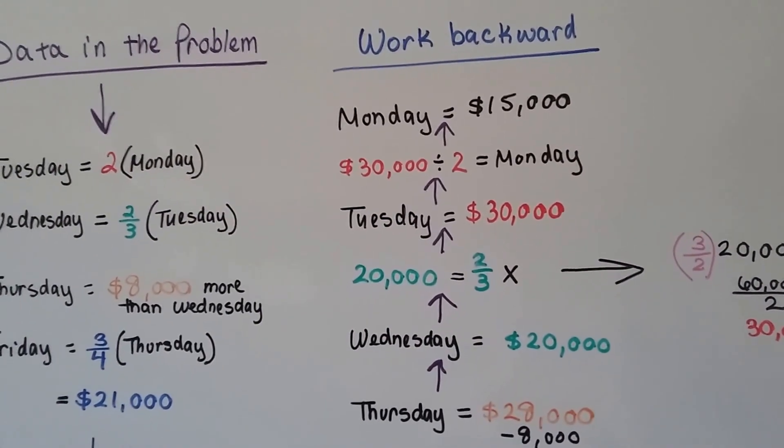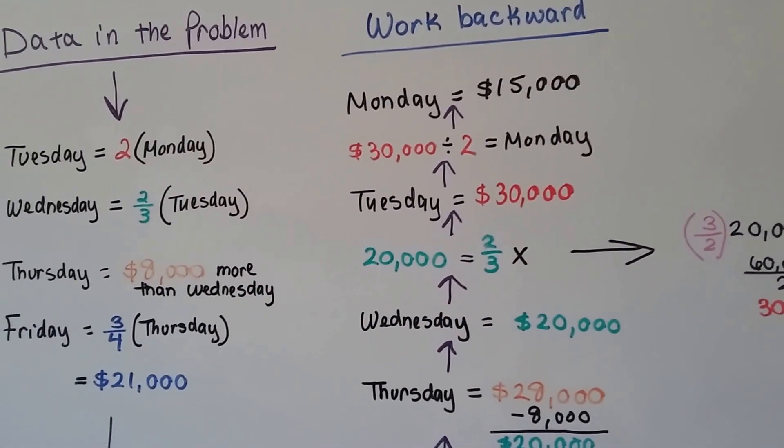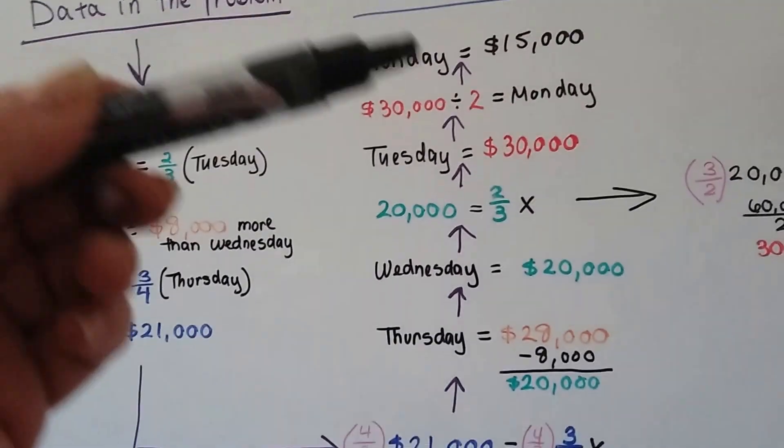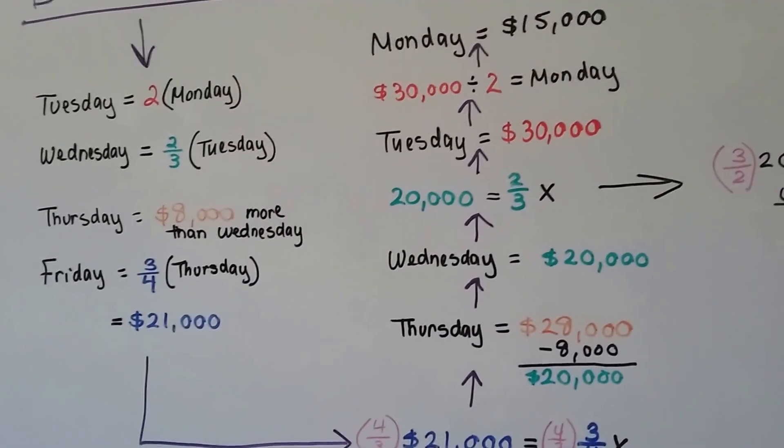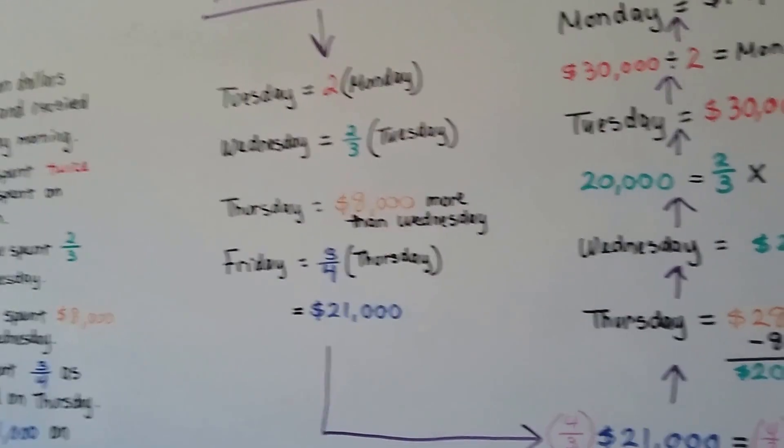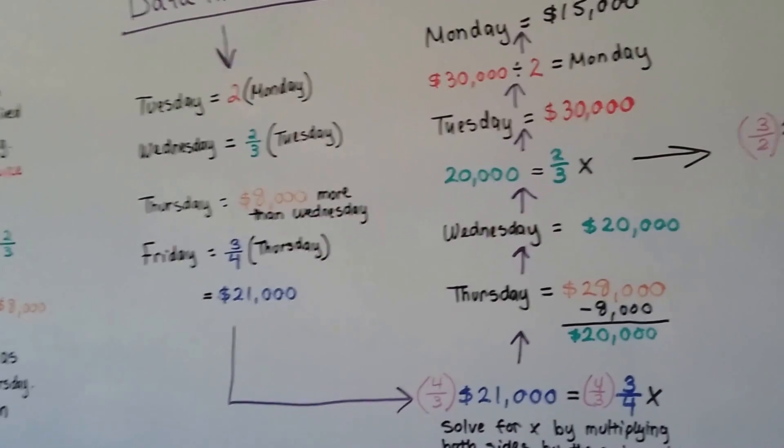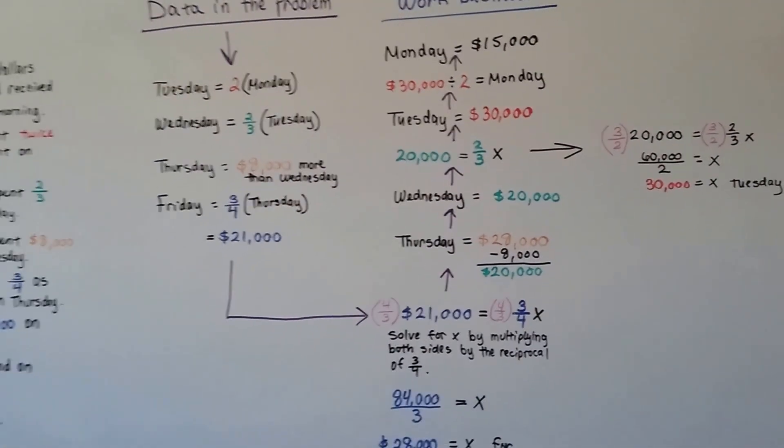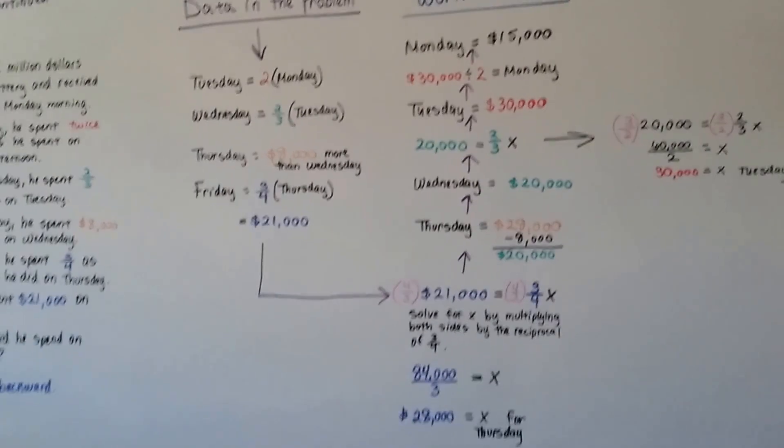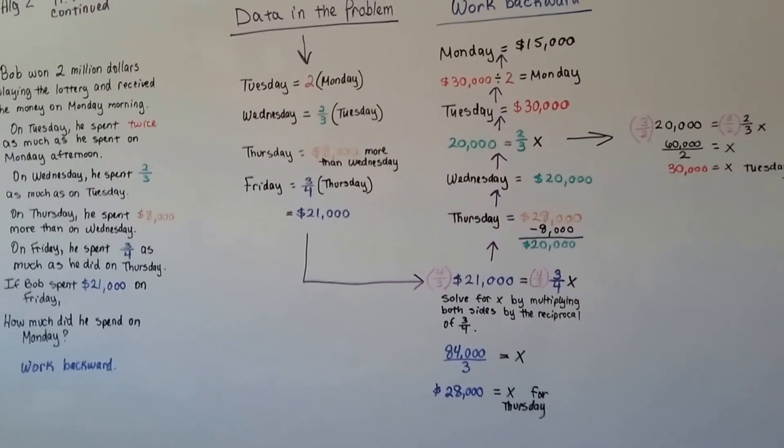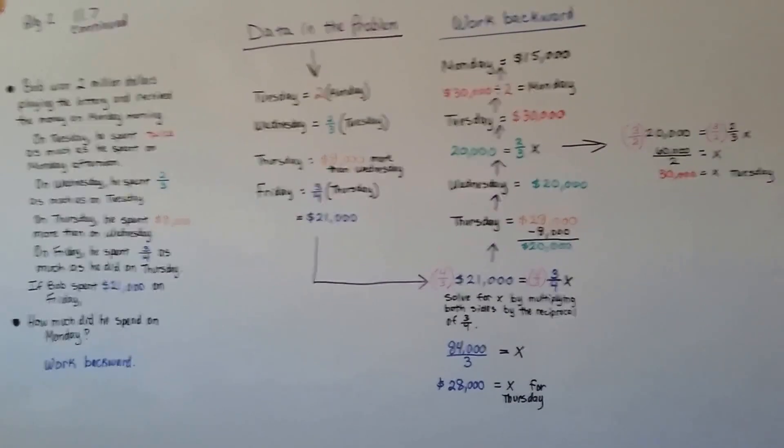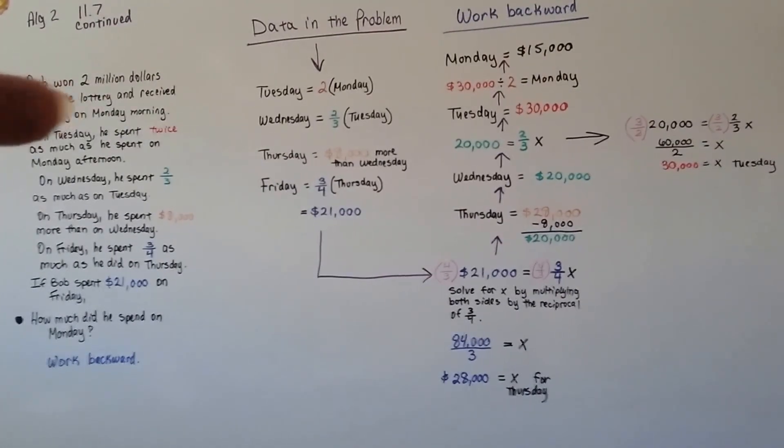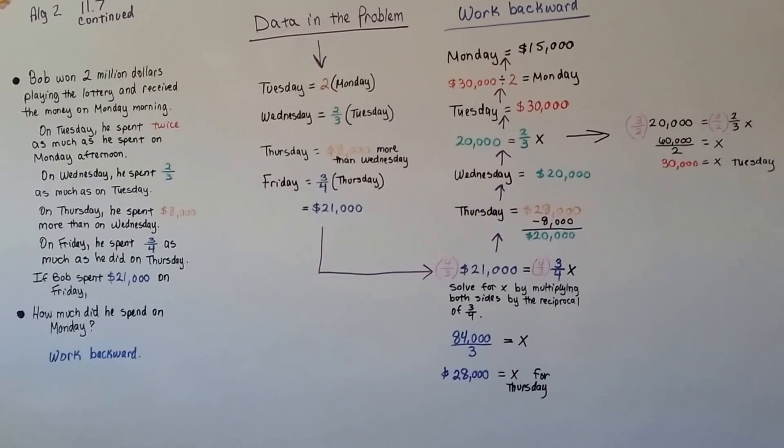Wow, he's really going through his lottery winnings. We could even take this one step further and figure out how much he spent total by adding all the amounts he spent on these days and subtracting it from the two million to see how much he's got left. So we could keep going. We could find a total spent, we could find total left. So working backwards sometimes is the best way to solve a problem, especially when it's very long and drawn out and difficult like this, and they're asking you about what happened in the beginning and they give you the information at the end.